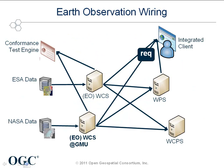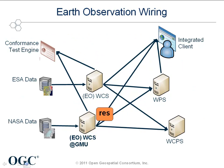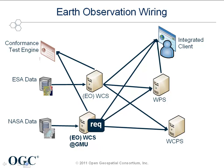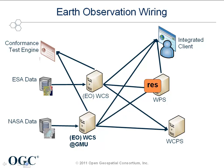These NASA data archived by GMU could be either delivered to WCS clients directly with their customization capabilities, or fed into a WPS service for the integrated client as a data provider.